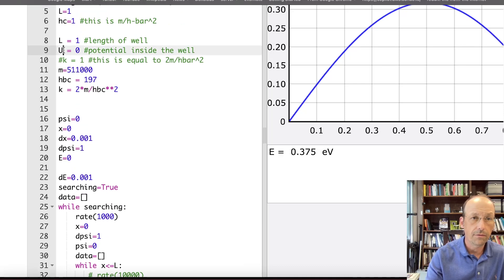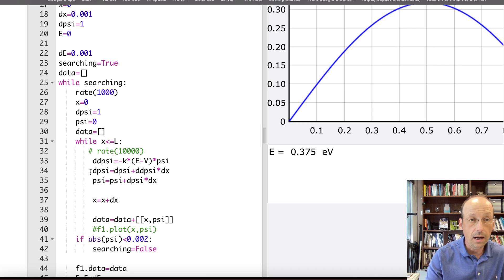Let's put up here V equals zero. So give me the same thing. Calculate psi dot. Calculate psi. Update x. And then add that data point, those two values, to my data. And that's what I'm going to plot.